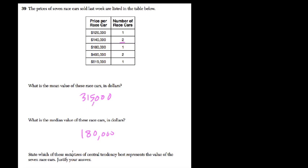State which of these measures of central tendency best represents the value. Justify your answer. So if we look at the spread of the data, it goes from $126,000 all the way up to $819,000.